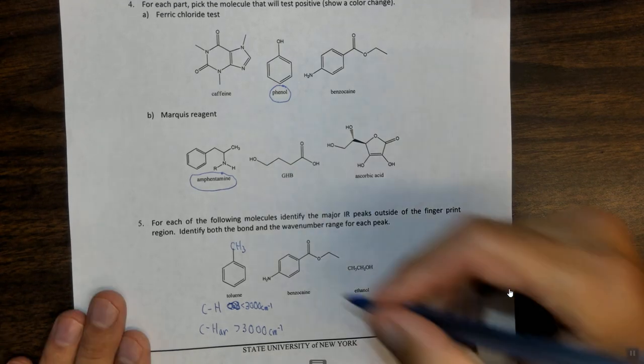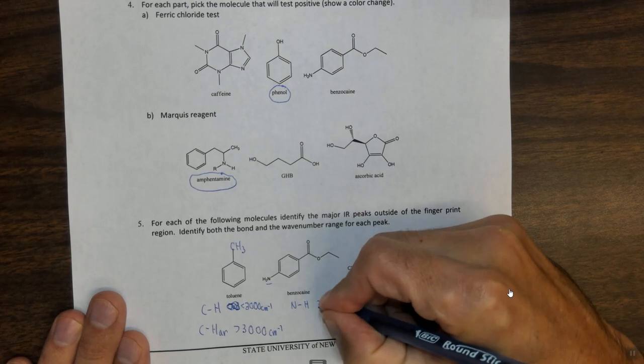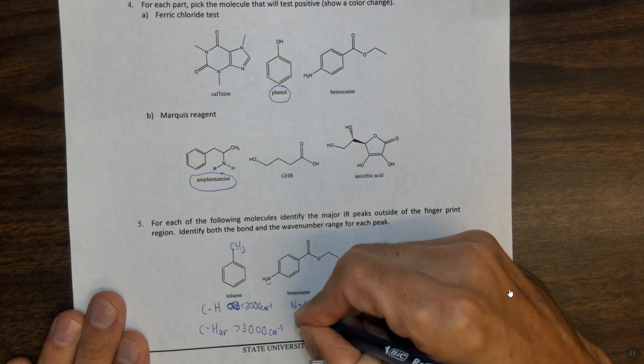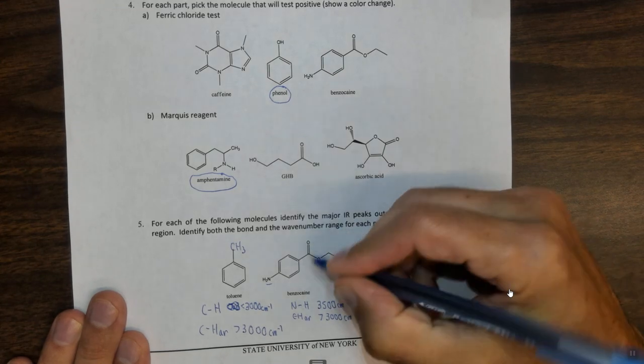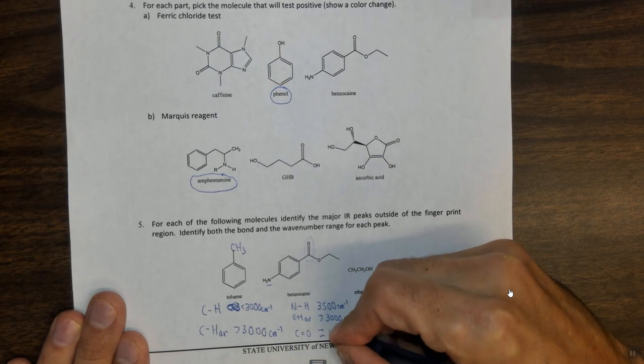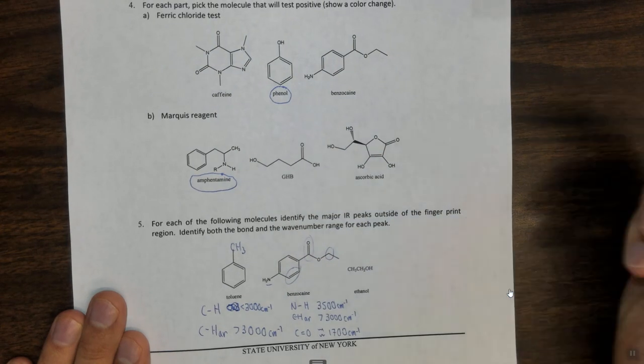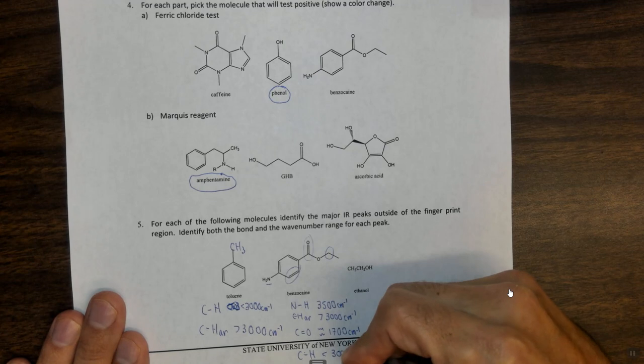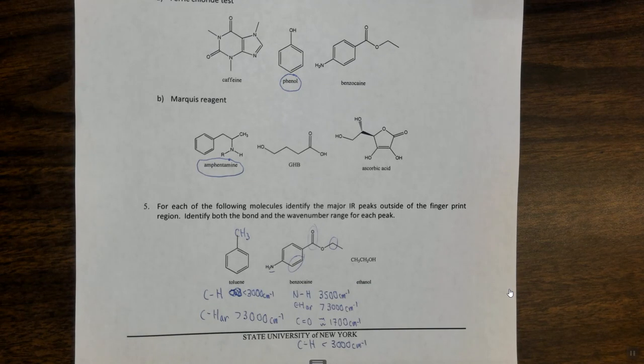I'm going to start going left to right. So here we're going to have an NH and that's going to occur at about 3,500 centimeters to the minus one. Here we have a CH aromatic which again is going to be greater than 3,000 centimeters to the minus one. Next we have a C double bond O which is going to be somewhere around 1,700 to 1,800 centimeters to the minus one. And finally we have an aliphatic or a CH non-aromatic which is going to be just less than 3,000 centimeters to the minus one. I will say that in the lab you actually use the IR as kind of like a fingerprinting system, but these are just some general peaks and if you've had organic chemistry you've already seen these.